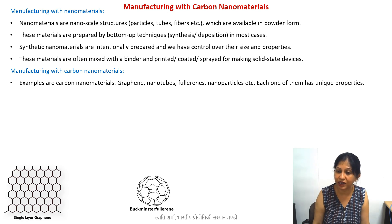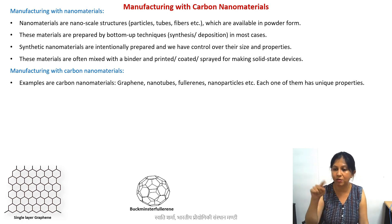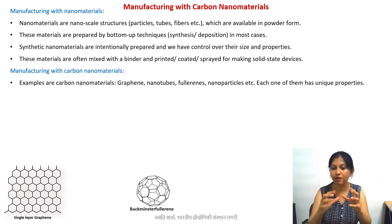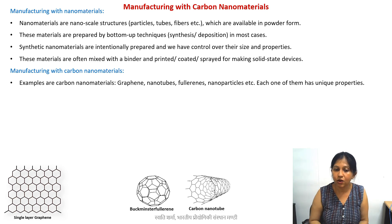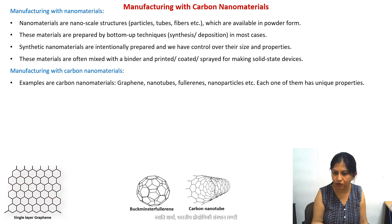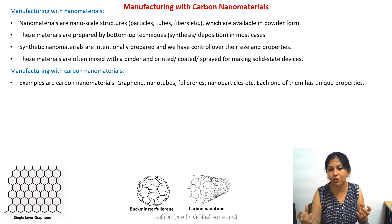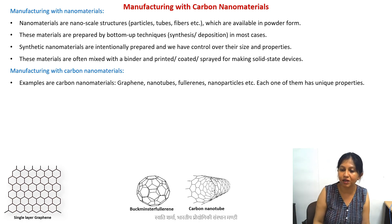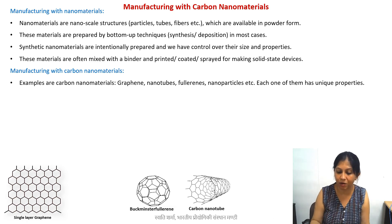Fullerenes are football-like structures made of carbon atoms, but the sheets are not all six-membered — you also have five-membered rings, because only then can you provide the curvature. Carbon nanotubes are formed by taking a sheet of graphene and rolling it up. You can have single-walled or multi-walled carbon nanotubes: one cylinder is single-walled, and multiple concentric cylinders give you multi-walled carbon nanotubes.